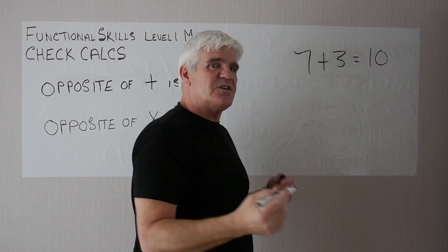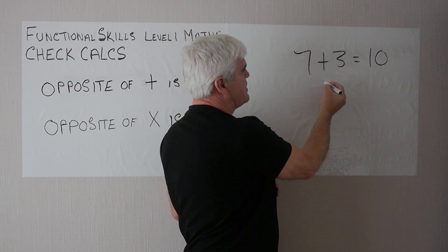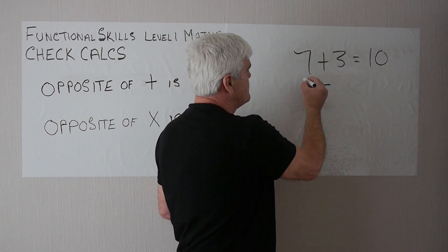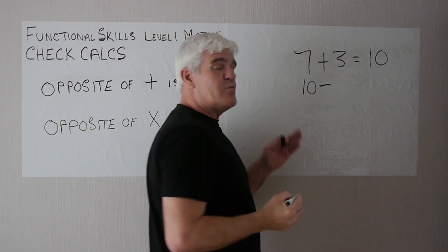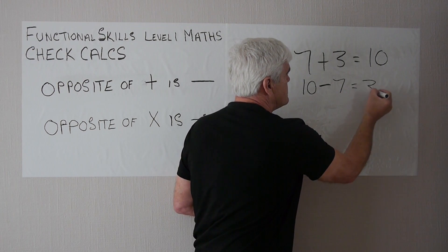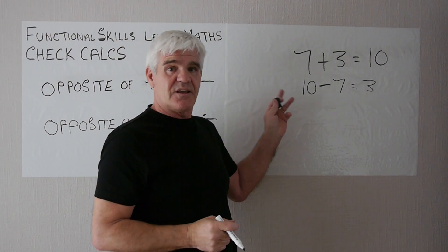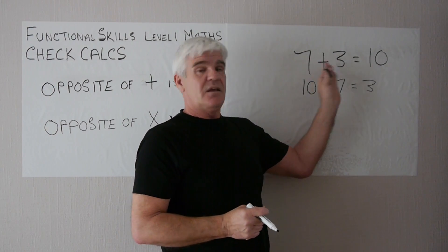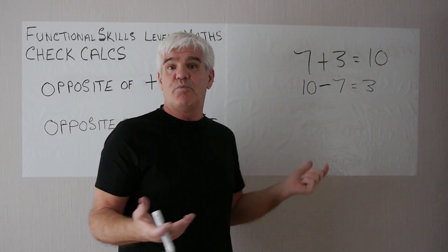If 7 plus 3 equals 10, and the opposite of plus is minus, we take the answer, which in this case is 10, and if we minus off the 7, that is you perform the check calculation. This confirms that the above calculation is correct, and you'll get two points for that.